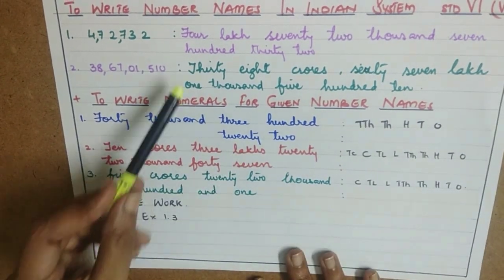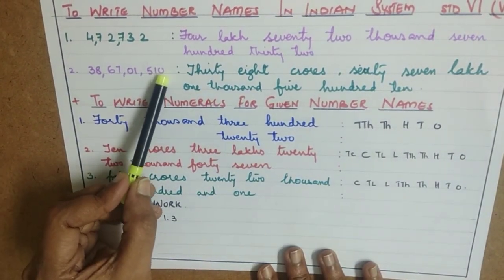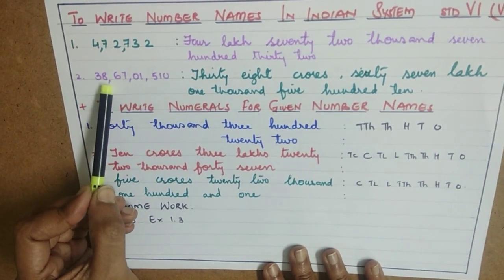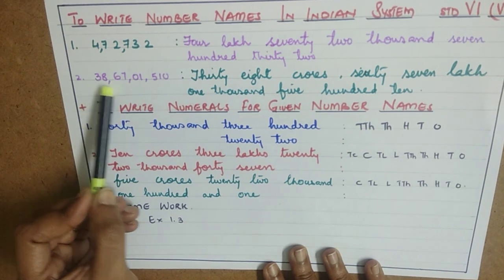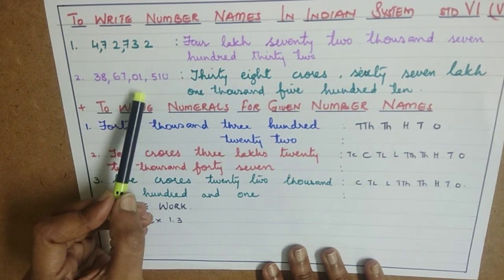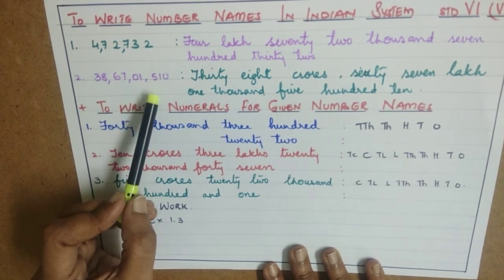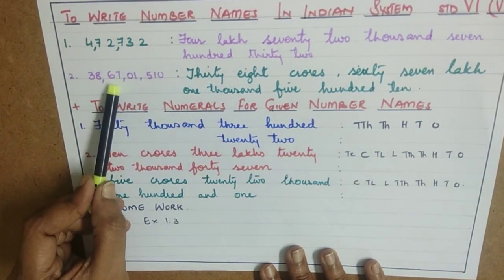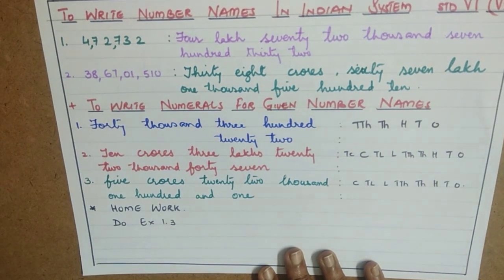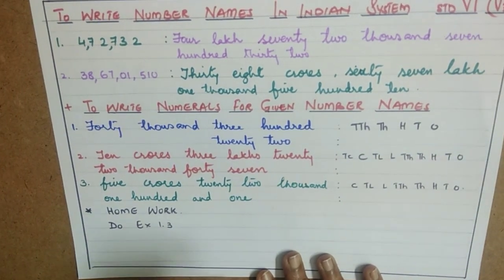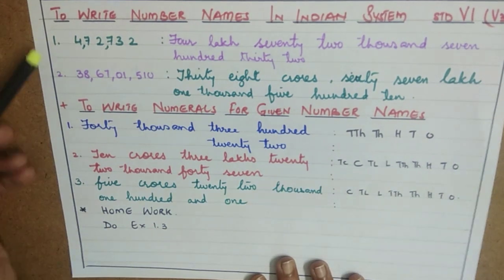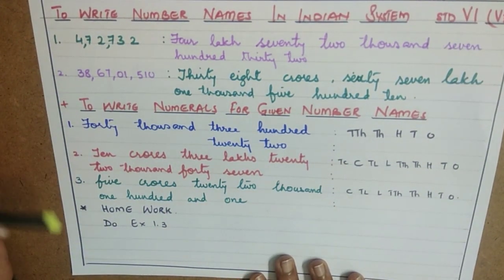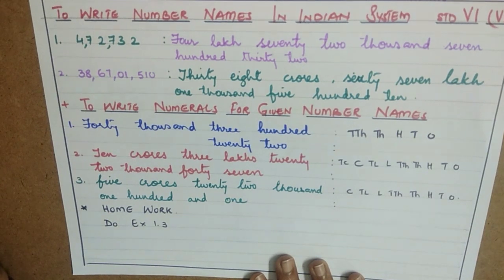Now a slightly bigger number. Let us read it: ones, tens, hundreds; thousands, ten thousands; lakhs, ten lakhs; crores, ten crores. So this is a 9-digit number. It is 38 crores, 67 lakhs, 1510. That is the number name of the given number. Taking these as examples, you can do the remaining sums given in exercise 1.3.